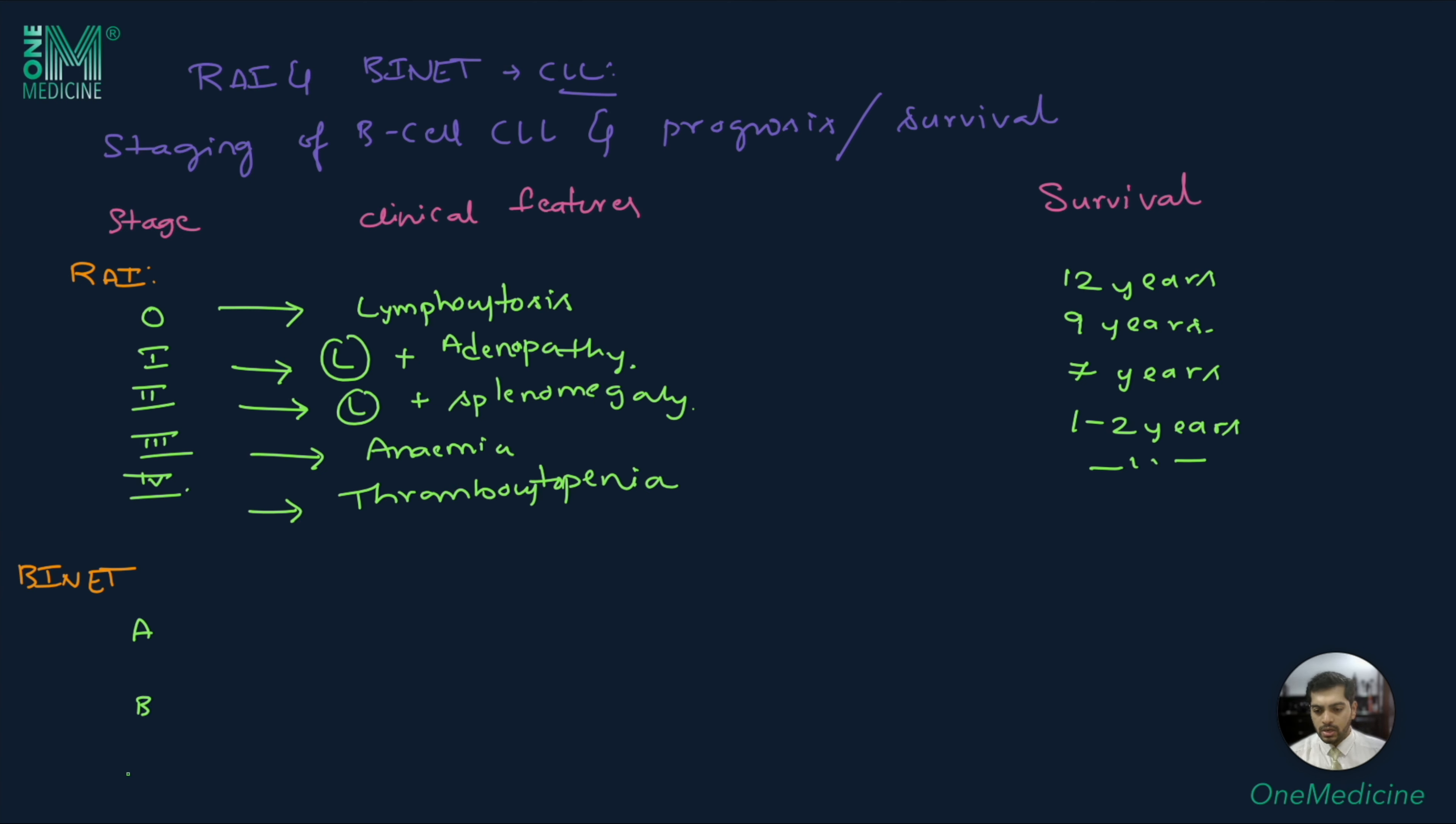In Bennett staging: stage A is no anemia or thrombocytopenia and less than 3 sites involved with median survival more than 10 years. Stage B is no anemia or thrombocytopenia and more than 3 sites involved with median survival more than 5 years. Stage C is patients have anemia plus or minus thrombocytopenia, and here the survival drastically reduces to 2 years.